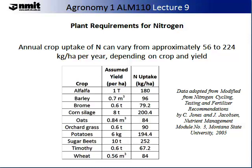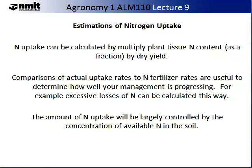Annual crop uptake of nitrogen can vary significantly, from approximately 56 to 224 kilograms per hectare per year, depending on not only the crop but also the yield. For example, alfalfa at an assumed yield of one tonne would take up 180 kilograms per hectare, while oats for every 0.84 cubic metres might take up 84 kilograms per hectare. From the example on the slide, corn silage takes up the most nitrogen. Estimations of nitrogen uptake can be made using yield tables and multiplying by your yield.